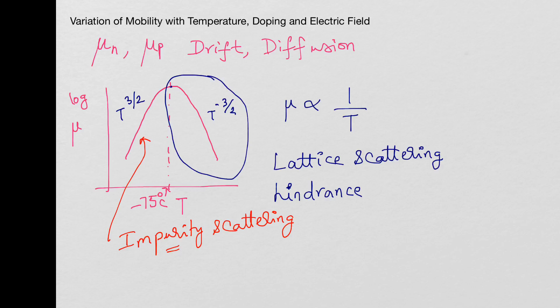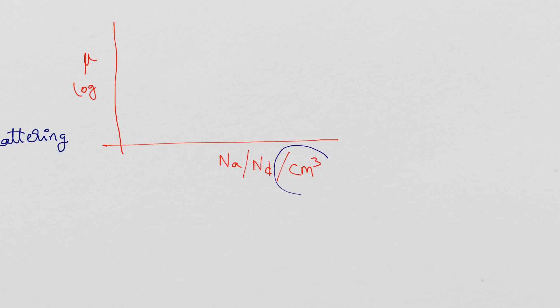Now let's look at how mobility varies with doping. If you plot mobility on a log scale and put NA or ND, the acceptor or donor concentration per centimeter cube on the x axis, at zero it is basically intrinsic silicon.